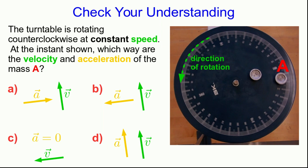How did you do? If you answered c, then you fell into the trap. The fact that the speed is constant does not make the acceleration zero. Acceleration isn't rate of change of speed, it's rate of change of velocity. And the velocity is changing direction continuously, so the acceleration is definitely not zero. This object is not going towards the center — it's going around the circle. And as always, instantaneous velocity is tangent to the path that the object follows, so it's tangent to the circle.